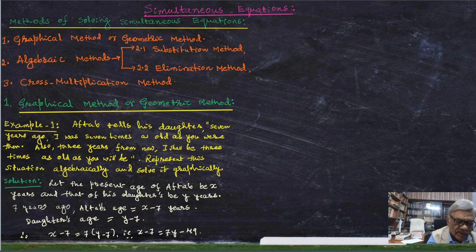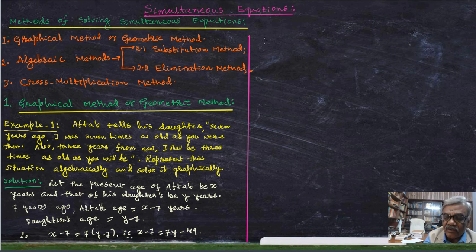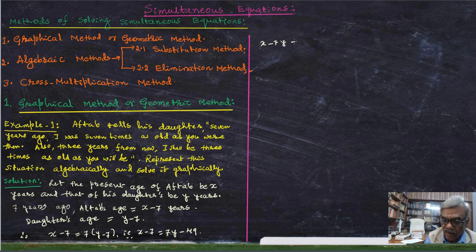Simplifying: X minus 7Y plus 42 equals 0. This is the first equation.